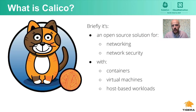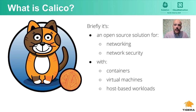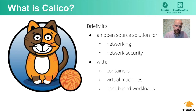I'm going to start by talking a little bit about Calico. So what is Calico? It's an open source networking and network security solution for containers, virtual machines, and native host-based workloads. It supports a broad range of platforms including Kubernetes, OpenShift, Mirantis Kubernetes Engine, OpenStack, and bare metal services.